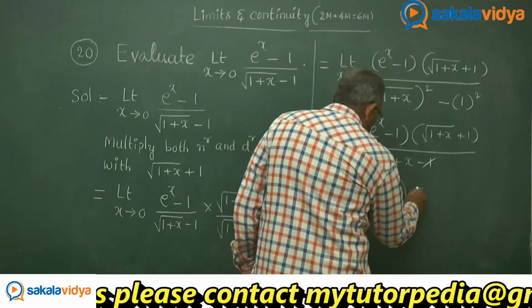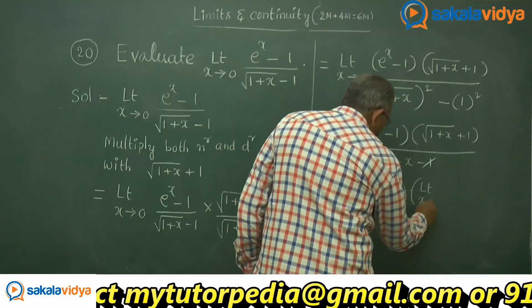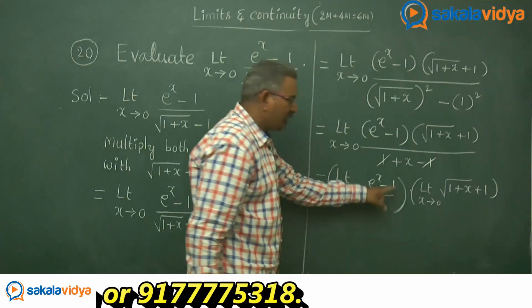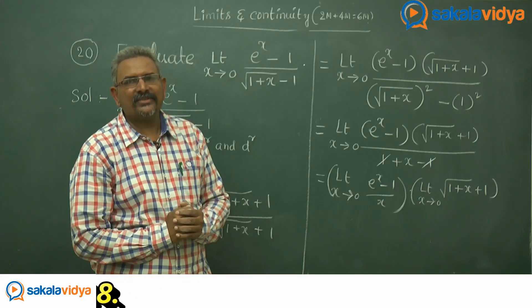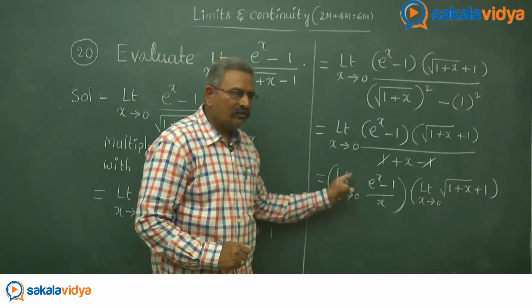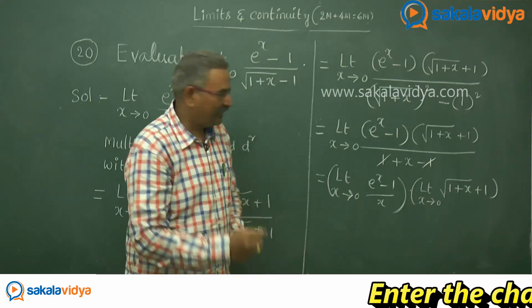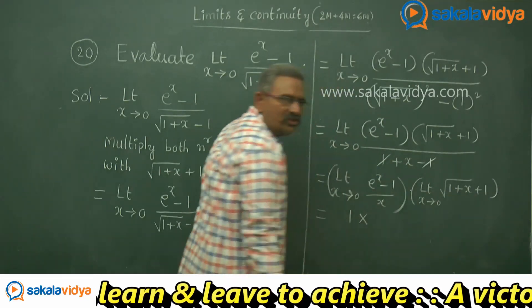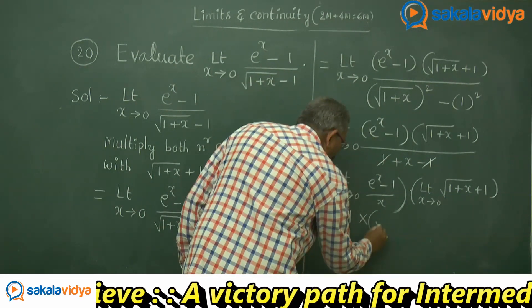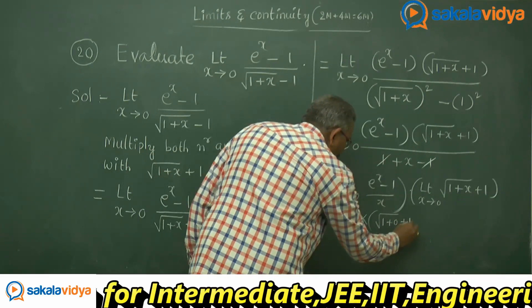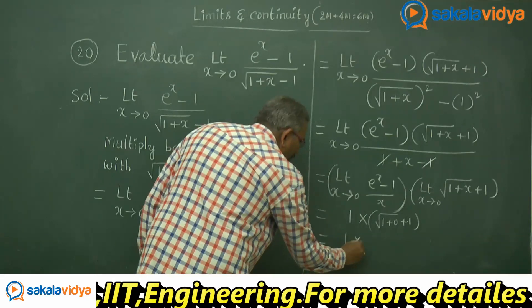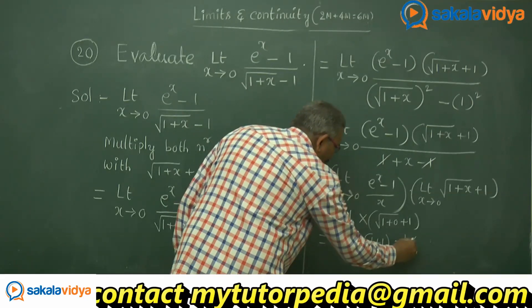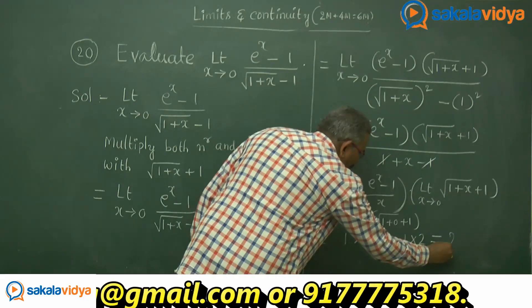Limit x tends to 0 of root of 1 plus x plus 1. The first part, limit x tends to 0 of e power x minus 1 over x, is one of the standard results — its value is 1. So we get 1 multiplied by root of 1 plus 0 plus 1. Root of 1 is 1, and 1 plus 1 equals 2. So the answer is 2.